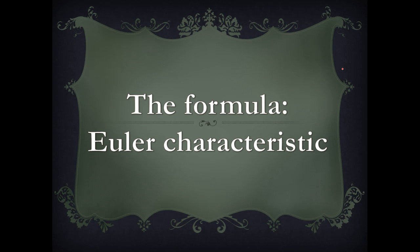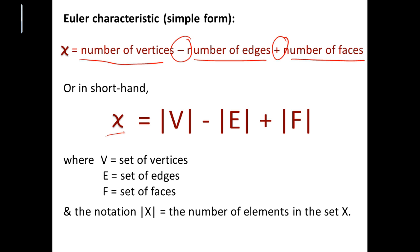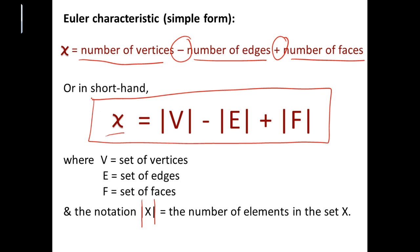We are interested in the Euler characteristic, which can give us information about the shape of an object. In its simplest form, the Euler characteristic is just the number of vertices minus the number of edges plus the number of faces. In shorthand, if we use the Greek letter chi to represent the Euler characteristic, capital V for the set of vertices, capital E for edges, capital F for faces, and absolute value notation to denote the number of elements in a set, then chi equals |V| minus |E| plus |F|.